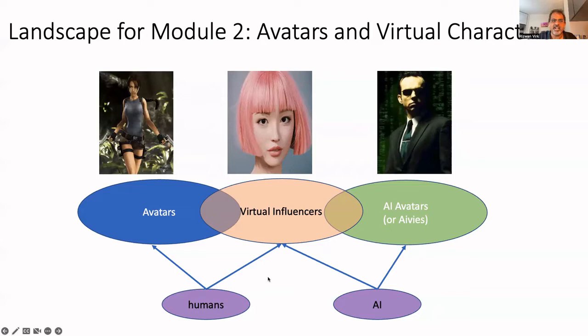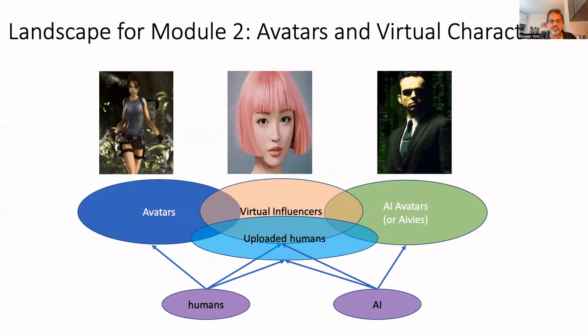There's another part of the landscape that cuts between humans and AI — uploaded humans — which is for the far future and will be covered in later modules. This is when you take all the information in a human brain, upload it to a virtual environment, and then it's run by AI from that point forward, as dramatized in recent science fiction like the show Upload.